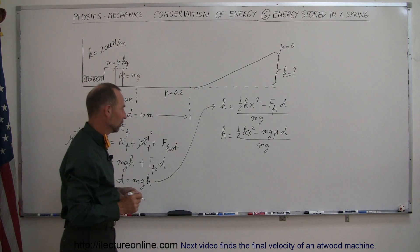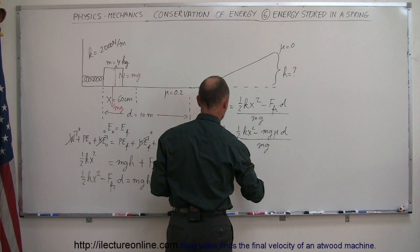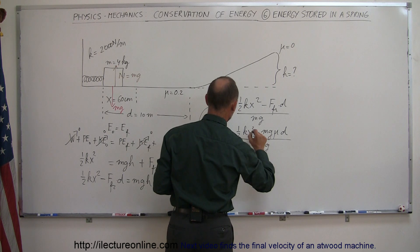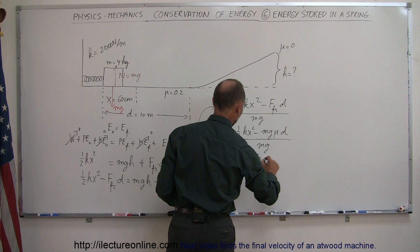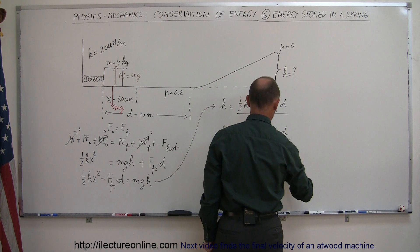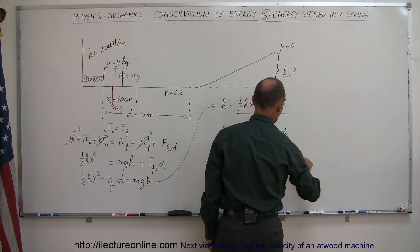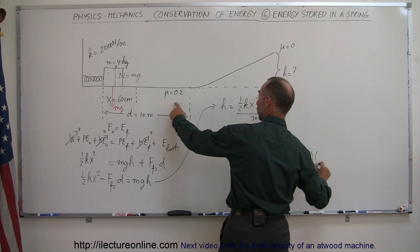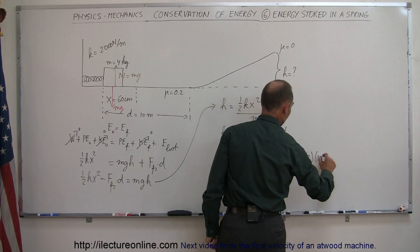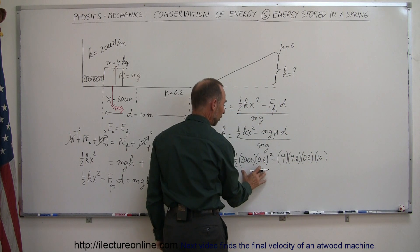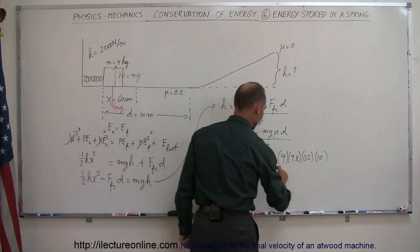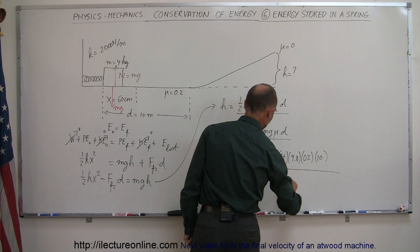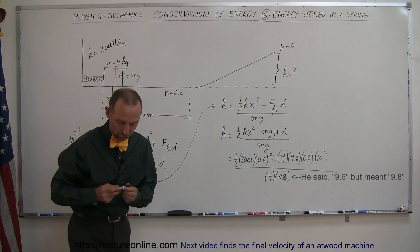So let's find out what that's equal to. So this is equal to one-half times k, I'll leave the units off, make it cleaner, 2,000 times x squared, which is 0.6 squared, minus the mass, which is 4, g, 9.8, mu was equal to 0.2 right here, and the distance was 10 meters. So this is the energy lost by overcoming friction. That's how much energy was stored in the spring. And if we divide that by the weight of the object, which is 4 kg times 9.8, that will tell us how high it managed to go.